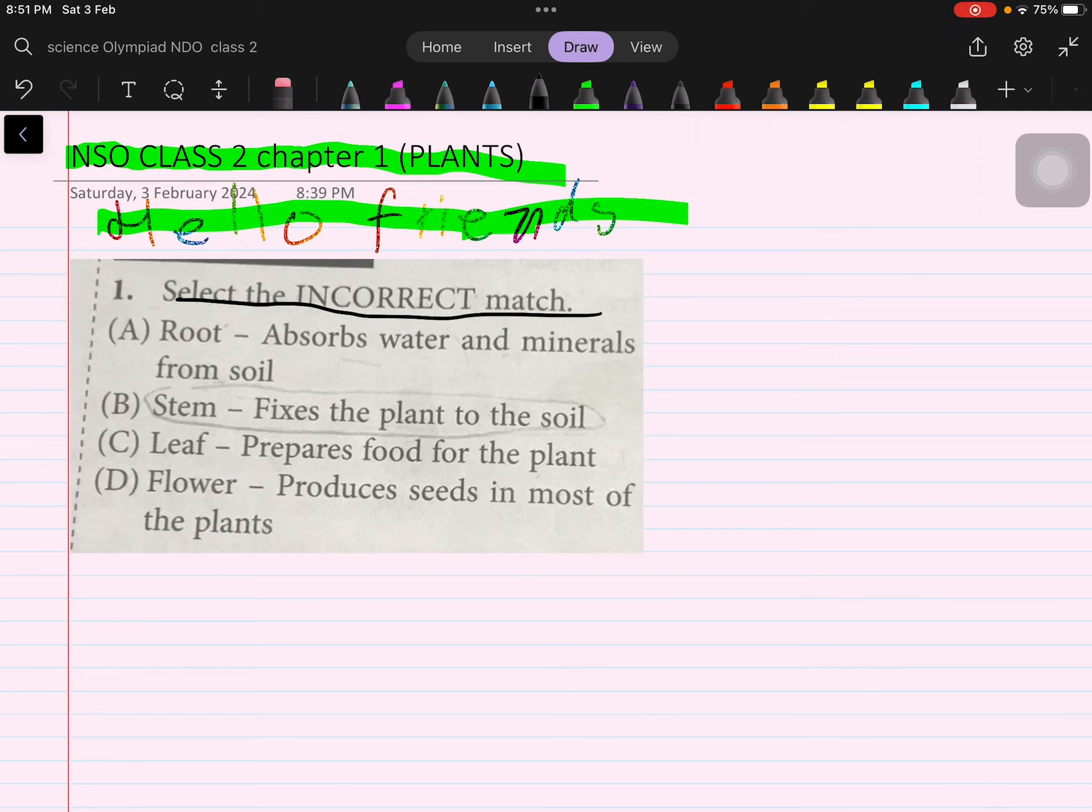Read the first option. Root absorbs water and minerals from the soil - that is correct. Stem fixes the plant to the soil. Yes, it is correct. These are correct. Leaf prepares food for the plant. The second one is not correct. Stem doesn't fix the plant to the soil. Roots fix the plant to the soil.